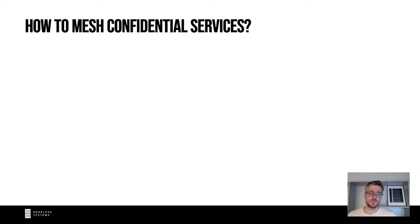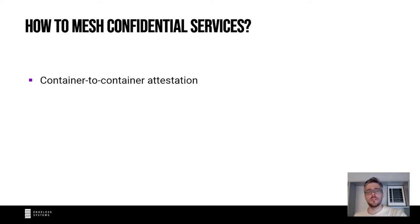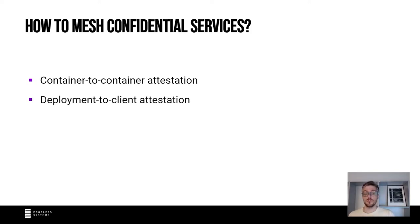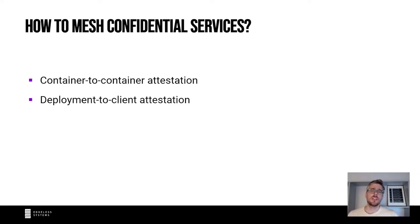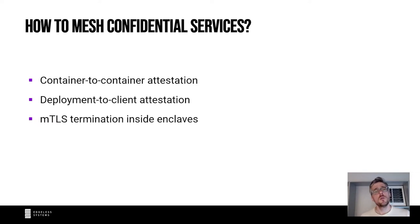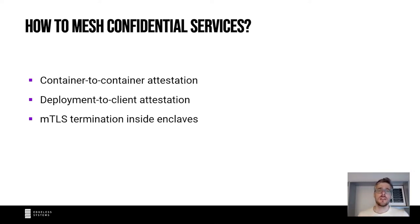Secure meshing requires a few things. First, we need container-to-container attestation: a container running inside an enclave must verify that the other container it's talking to is also running inside an enclave, because otherwise mock-up enclaves could steal secrets. Next, we need deployment-to-client attestation so clients can verify the overall integrity and functionality of the deployment. We also need mTLS to terminate directly inside secure enclaves rather than inside sidecar proxies, because otherwise it could be intercepted by attackers.